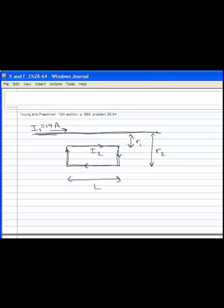And we're trying to find the net force on this loop of wire due to the magnetic field from the long straight wire. So the first thing we want to do is take a look at the magnetic field from the long straight wire.